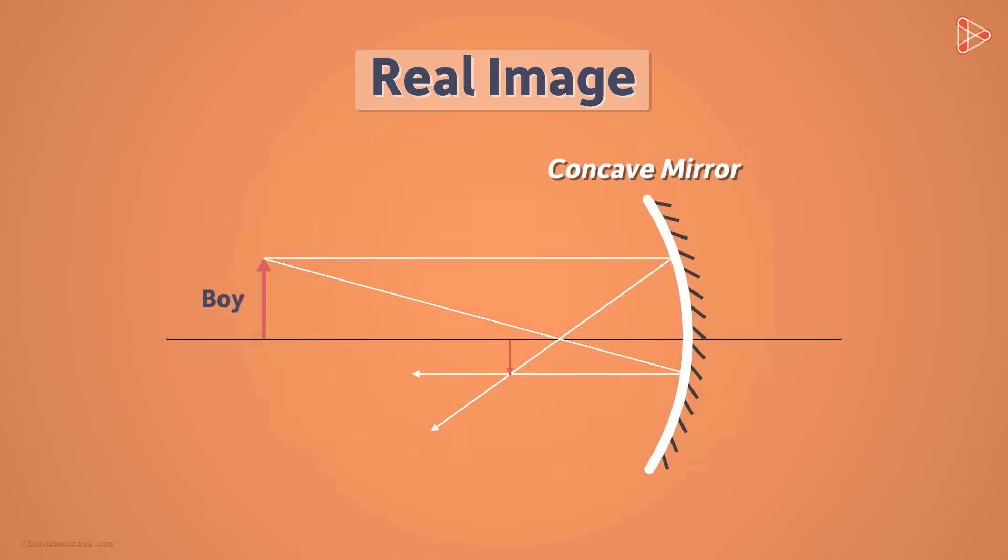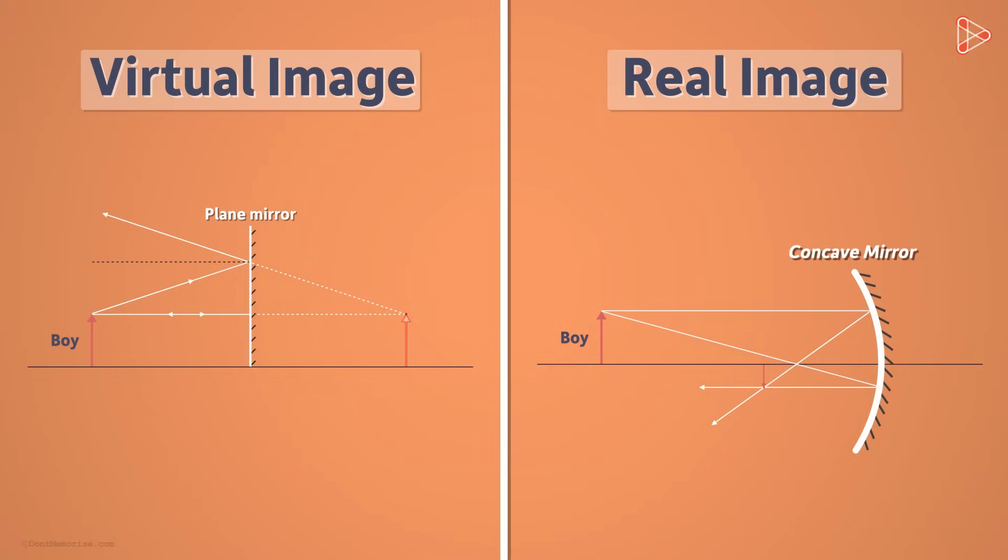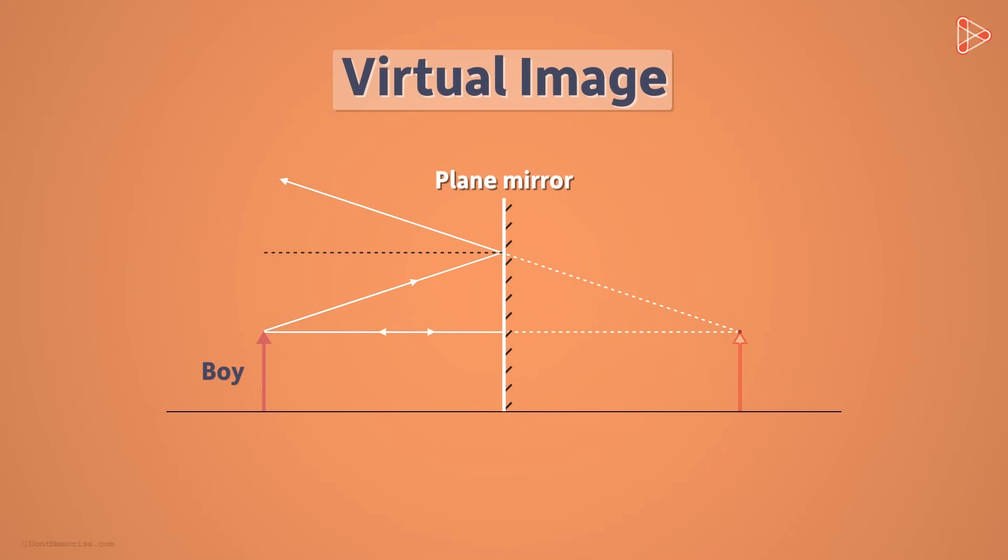So did you understand the difference between a virtual image and a real image? When we look at a virtual image, it appears to us that the light rays are diverging from a point somewhere behind the mirror. But in reality, they aren't as no light reaches behind the mirror. It's only our perception.